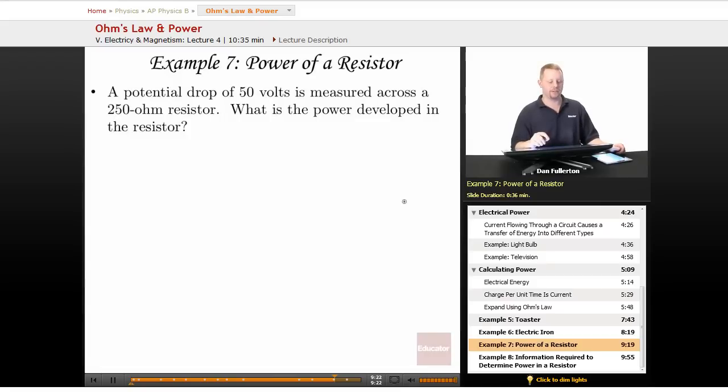About the power dissipated by a resistor. A potential drop of 50 volts is measured across a 250 ohm resistor. So our resistance is 250 ohms. What is the power developed in the resistor? So we're looking for P.